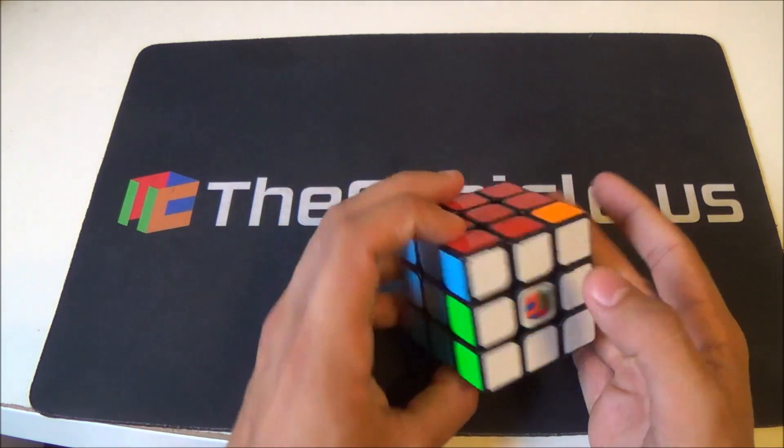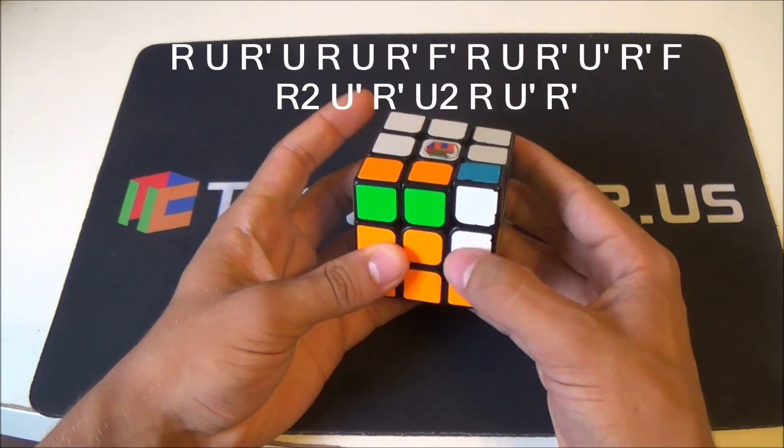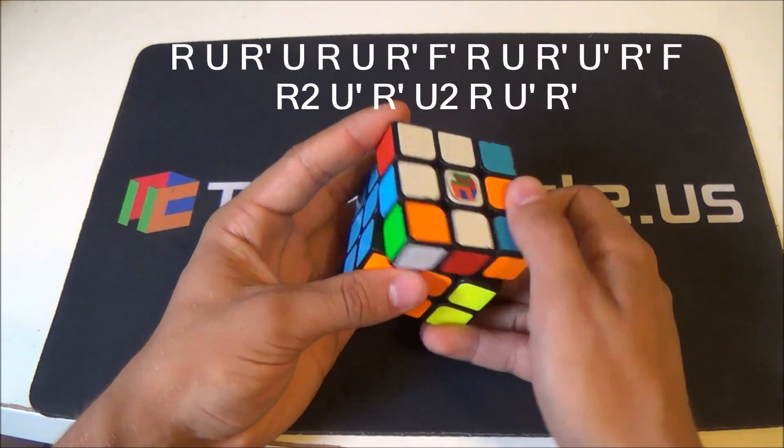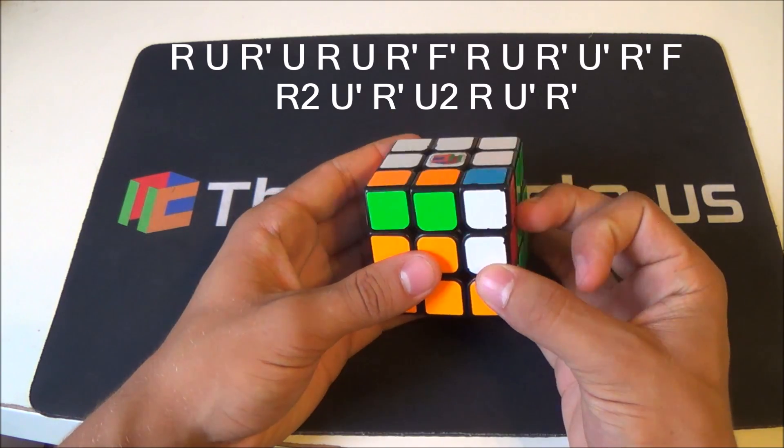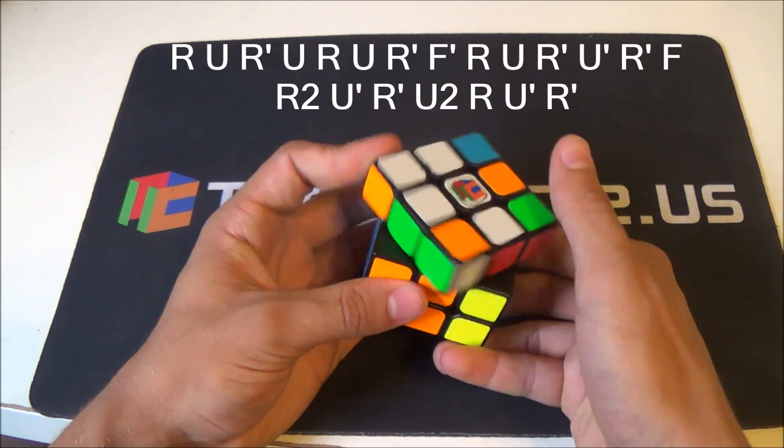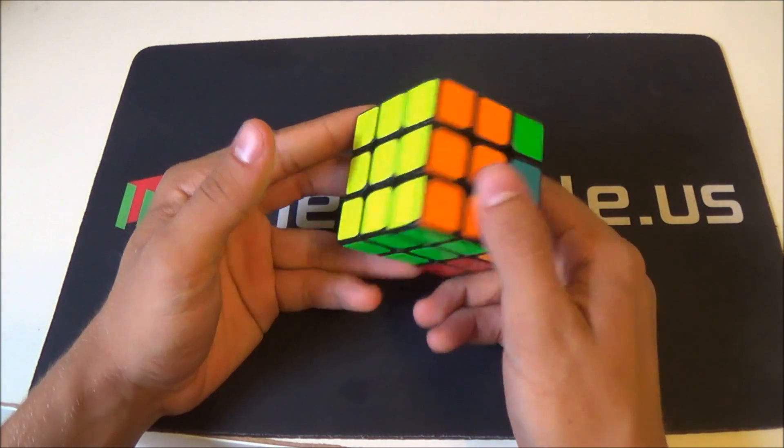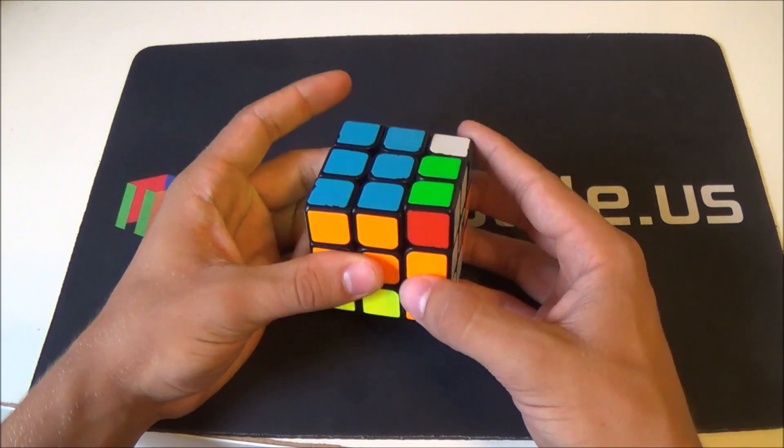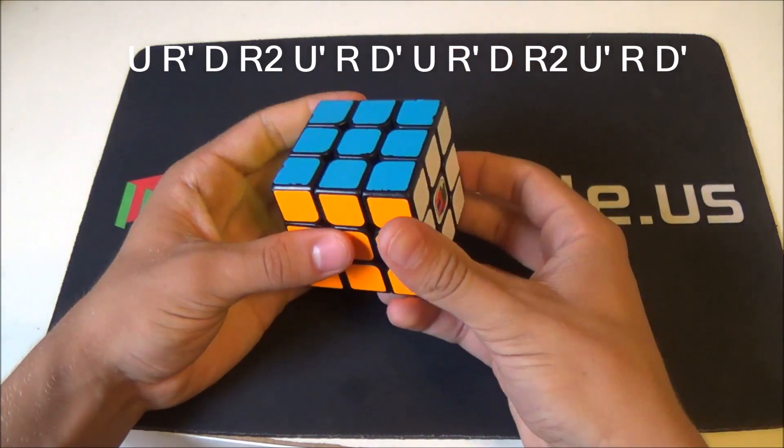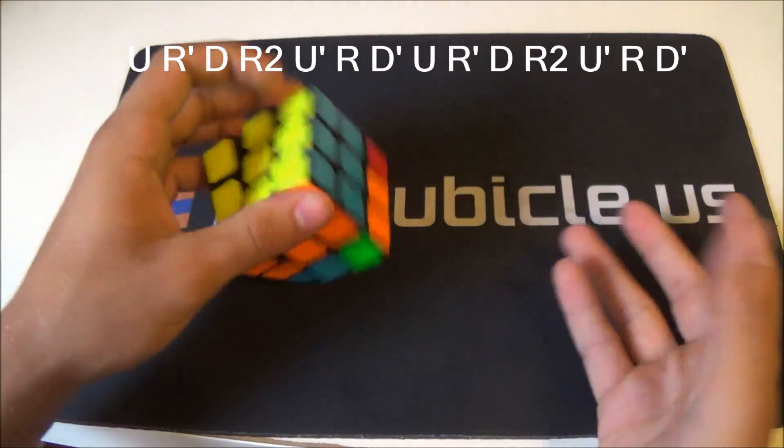Alright guys, time for the N perms. So this is the NA perm. The most common alg is just to set up to a J perm. So that would be, and now you've set it up to a J perm where these two blocks need to switch. So you go ahead and execute that J perm. And then you finish it off by undoing your setup moves. So here it is all together. You can also do a Z rotation and execute this alg from here. I can actually sub on that, but that was awful.